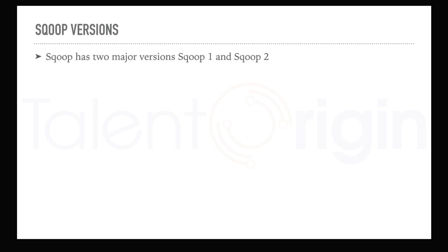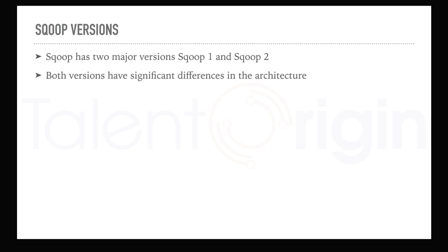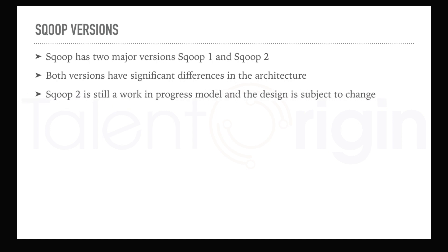Let's look at Sqoop versions. There are two major versions of Sqoop available: Sqoop 1 and Sqoop 2. Both versions have significant architectural differences in how they interact with RDBMS and how they store data into Hadoop. Sqoop 2 is still a work-in-progress model and its design is subject to change. Because it is not completely stable, for production usage it is recommended to use Sqoop 1 instead of Sqoop 2.